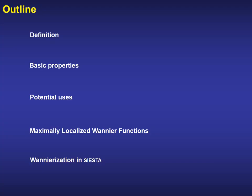This is the outline of the talk. I shall split it in five different sections. First of all, I shall define what a Wannier function is. Then I shall describe their most important properties. Later, some of their potential uses will be highlighted. Emphasis will be made on the fact that the Wannier functions are not unique, and to describe one procedure to produce maximally localized Wannier functions. Finally, I shall deliver a brief introduction about how this is done in SIESTA, giving some hints about the kind of exercises you will play with in the practical sessions.